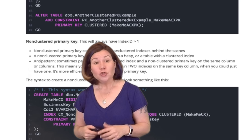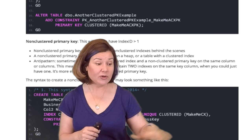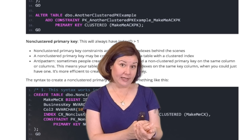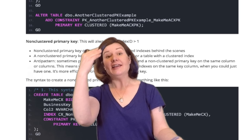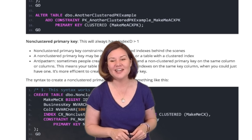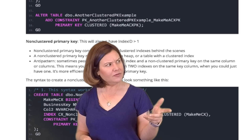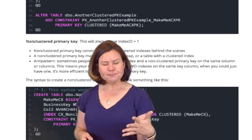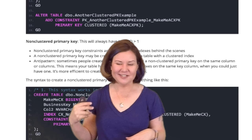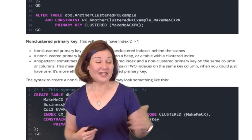You can create a non-clustered primary key on a heap — we don't have to have a clustered index. We can have a table without a clustered index with a non-clustered primary key. We can have a table with a clustered index that is also the primary key. We can have a table with a clustered index and a separate non-clustered primary key index. We can have a clustered column store table with a non-clustered primary key. There are a lot of different combinations in SQL Server, and some of these — like a non-clustered primary key on a clustered column store — are SQL Server 2016 only.